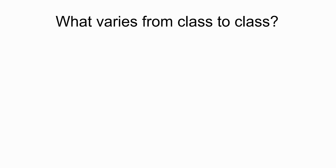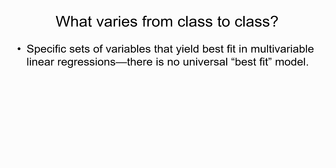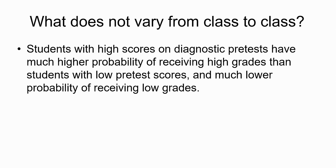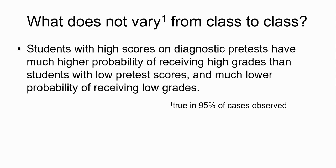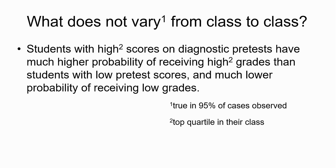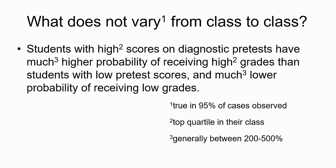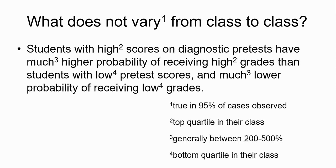What we see, first of all, is there's no one best-fit model that fits every class — it's different from class to class. But we do see that students with high scores on diagnostic pretests have much higher probability of receiving high grades than students with low pretest scores, and much lower probability of receiving low grades. This held in more than 95% of the cases. High scores and high grades both mean top quartile in their class. Much higher probability means generally between 200% and 500% higher probability — so it's pretty big.